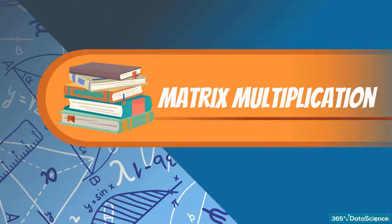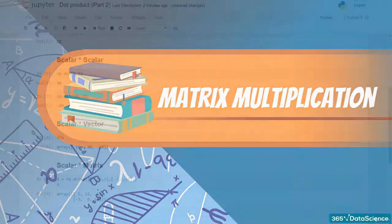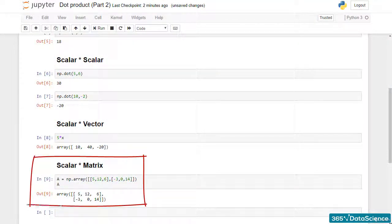Let's generalize the dot product notion to matrices. You can see this overly-used matrix once again, 5, 12, 6, minus 3, 0, 14.